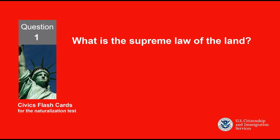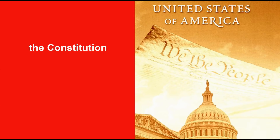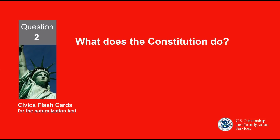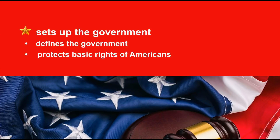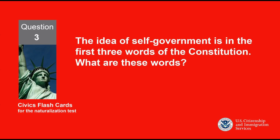What is the supreme law of the land? The Constitution. What does the Constitution do? Sets up the government. The idea of self-government is in the first three words of the Constitution. What are these words? We the people.